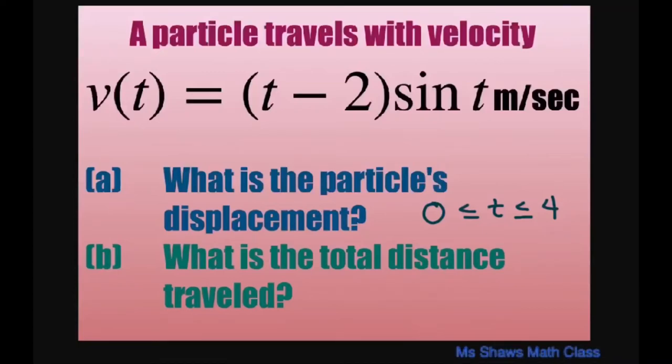Hi, everyone. A particle travels with velocity t minus 2 times sine of t meters per second over time interval 0 to 4. We're going to find the particle's displacement and the total distance traveled.